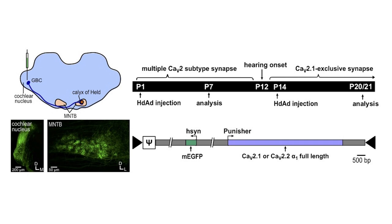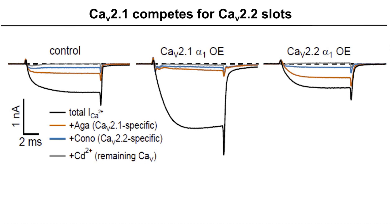We used helper-dependent adenoviral vectors in combination with our overexpression cassette, Punisher, to overexpress the CAV2.1 or CAV2.2 alpha-1 subunits in the Calyx of Held at two different developmental stages, before and after hearing. At the immature time point, before hearing onset, overexpression of the CAV2.1 alpha subunit led to a dramatic increase in total calcium current and CAV2.1 current with almost a complete loss of CAV2.2 currents.